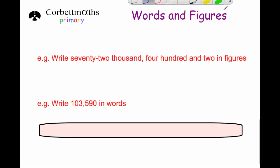Our next question says to write seventy-two thousand, four hundred and two in figures. So we'll write the seventy-two thousand first of all, then put the comma down. It then says four hundred, so four. And then there's no tens, and it's a two. So zero and two. So seventy-two thousand, four hundred and two.